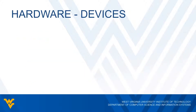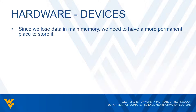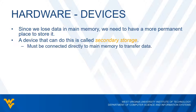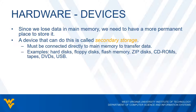We have additional devices beyond just the CPU and main memory. Because data stored in main memory can be lost, we need a place to store files on a more long-term basis. This is where secondary storage comes in — any device that can store files on a more permanent basis. These devices must be connected to the main memory in order to transfer data. There are several types of secondary storage devices: hard disks, floppy disks, flash memory, zip disks, CD-ROMs, tapes, DVDs, and USBs.